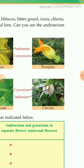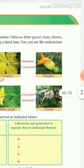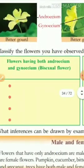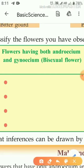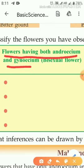Now consider clitoria — clitoria contains both gynoecium and androecium in the same flower. So we can conclude: a flower having both androecium and gynoecium is known as a bisexual flower.